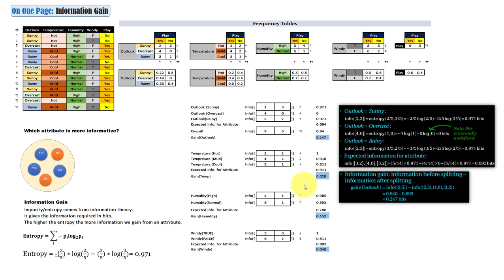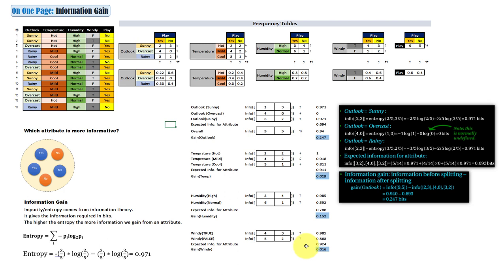This is the end of this simple explanation for information gain. As mentioned, you'll find the Excel sheet in the description below. If you change anything — for example changing a value from false to true — you can see all the numbers update accordingly. You can try different values and different combinations of attributes and observe the reflection on the information gain. Thank you very much, and I hope to see you in the next On One Page lecture.